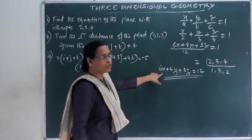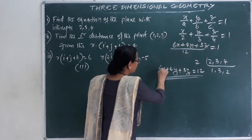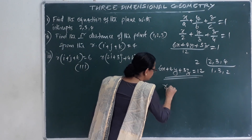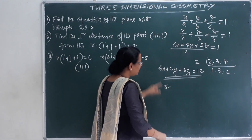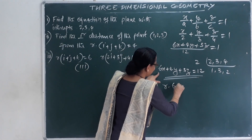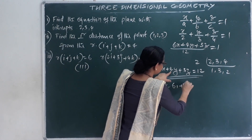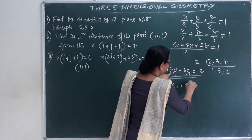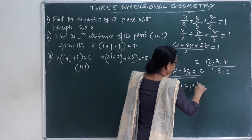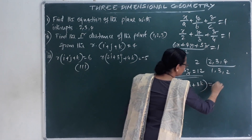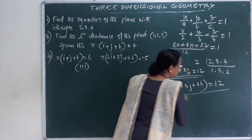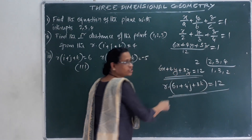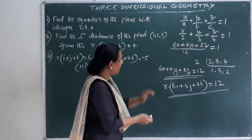Now for the vector equation: r · (6i + 4j + 3k) = 12. This is the vector equation of the plane.